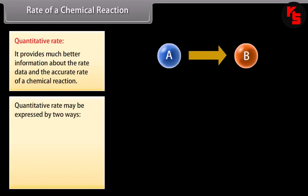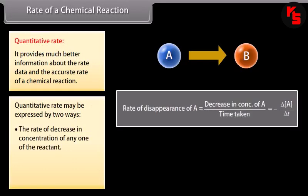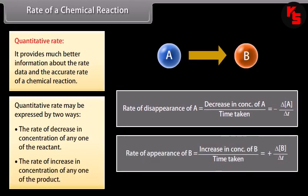Quantitative rate provides much better information about the rate data and the accurate rate of a chemical reaction. Quantitative rate may be expressed by two ways: the rate of decrease in concentration of any one of the reactants, or the rate of increase in concentration of any one of the products.